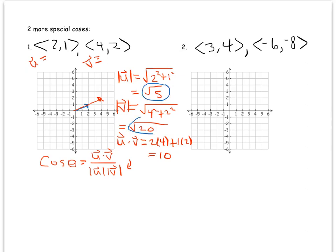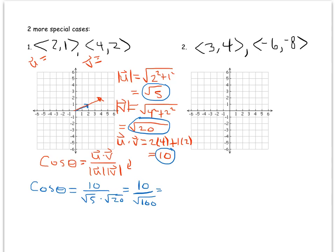Now I have all the pieces: magnitude of u, magnitude of v, and the dot product. Plugging into the formula, cosine of the angle equals u·v, which was 10, divided by the magnitude of u (square root of 5) times the magnitude of v (square root of 20). That equals 10 divided by the square root of 100, which is 10. So cosine of the angle equals 1.